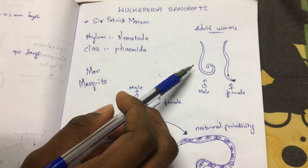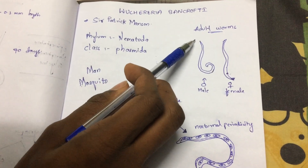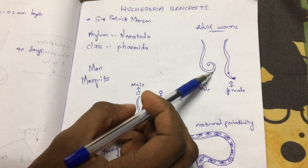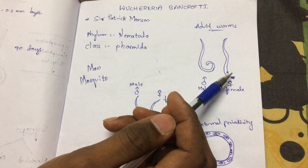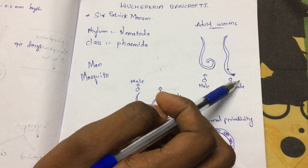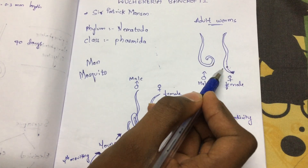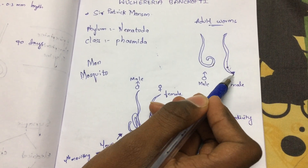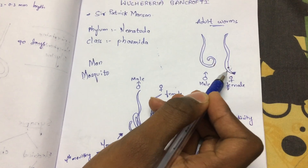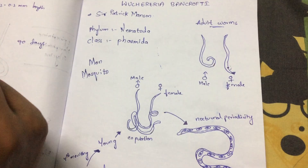The structure of the male adult worm: the anterior part will be apex pointed and the posterior part will be slightly curved. The female adult worm will be totally straight, and at the end of the female adult worm it mainly consists of a female genital pore. The function of the female genital pore is that it mainly undergoes copulation. This is the structure of the adult worms.